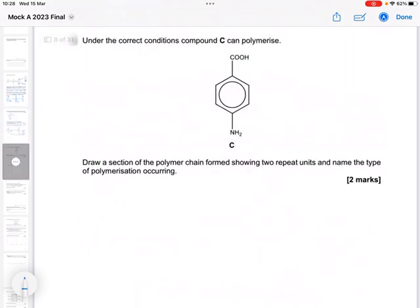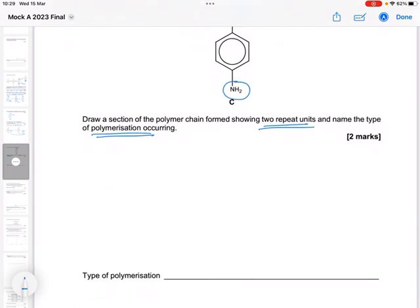And then under the correct conditions, C can polymerize. Draw a section of the polymer chain showing two repeat units and name the type of polymerization. Well, there's only two types of polymerization, there's addition and there's condensation. And with an amine at one end and a carboxylic acid at the other, this is going to be condensation.